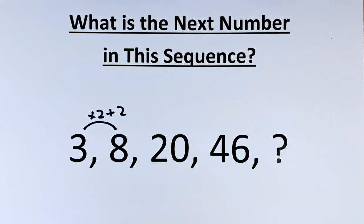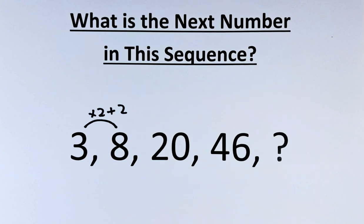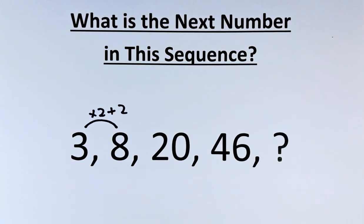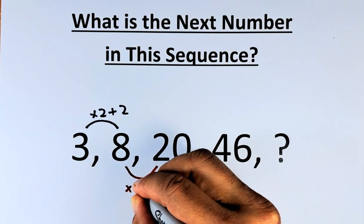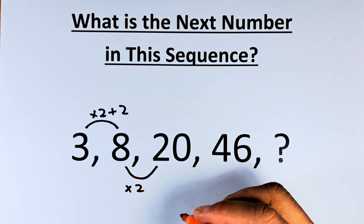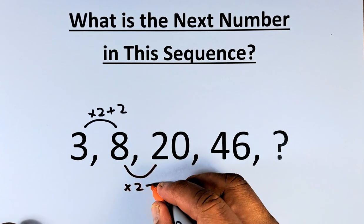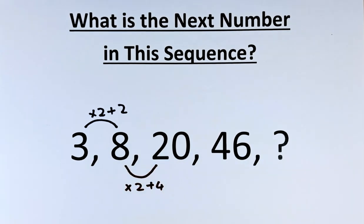Now, the next step. We are going to go from 8 to 20. So what we're going to do is that we are going to multiply by 2 again. 8 to 20, we multiply by 2. And this time, we are going to add 4. We increase it by 2 each time. So the first one, you multiply by 2 plus 2. The second one, you multiply by 2 plus 4. So 8 times 2 is 16. 16 plus 4 is 20.